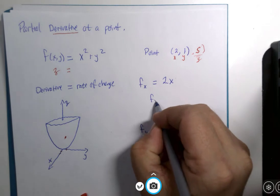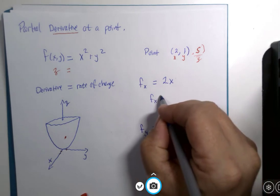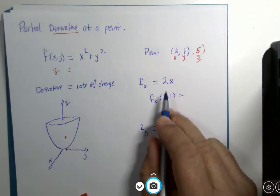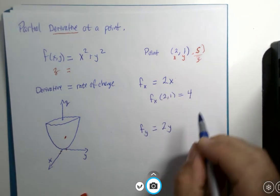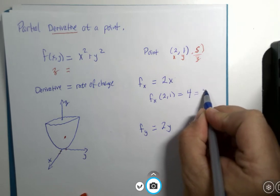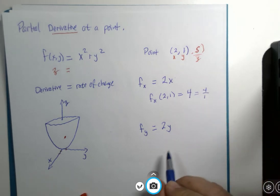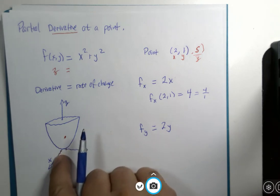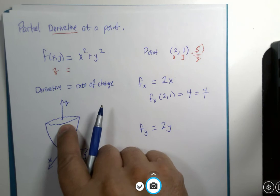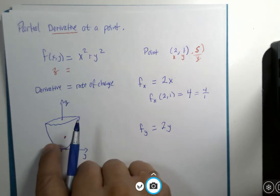The partial derivative with respect to x at the point 2 comma 1. Well, if x is 2, 2 times 2 is 4. And we could think of 4 as 4 over 1. What that means is if you were to go in the x direction, the steepness here would be up 4 in the z direction and over 1 in the x direction.